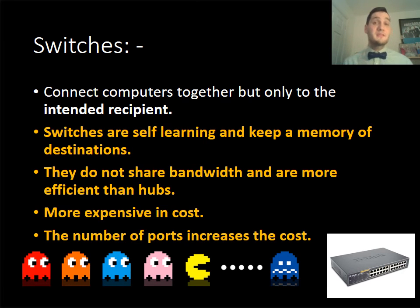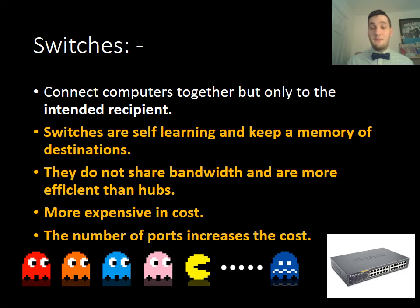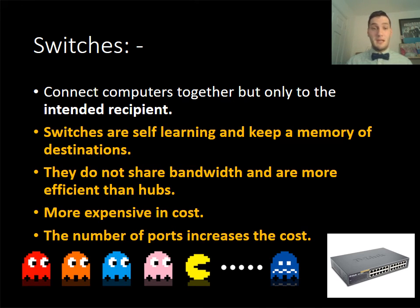This is where switches come in, because they're much more intelligent and self-learning — if you're sending data to the same machine on a regular basis, the switch will keep that port open so data can get through quickly. Switches don't share bandwidth; data just goes to the connection it needs, and as soon as it's finished, it drops it, only using the bandwidth that's needed rather than splitting it automatically. They are more expensive though, and the more ports you add, the higher the cost.